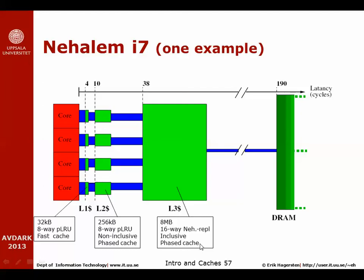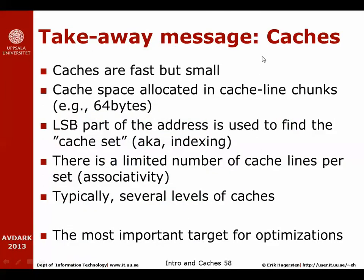Key takeaways from caches: caches are small but fast. Cache space is allocated in cache line chunks — for example, 64 bytes. The least significant part of the address is used as an index function to find the cache set where the data may reside. There is a limited number of cache lines per set, corresponding to the associativity. Typically we have several levels of caches in the hierarchy, and associativity, cache line sizes, and so on may differ between levels. Caches are probably the most important target for software optimizations, which we'll discuss in more detail later in the course.